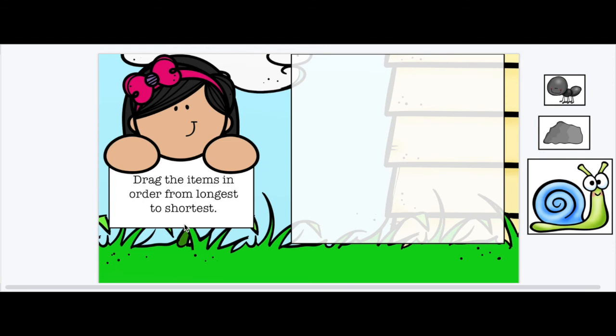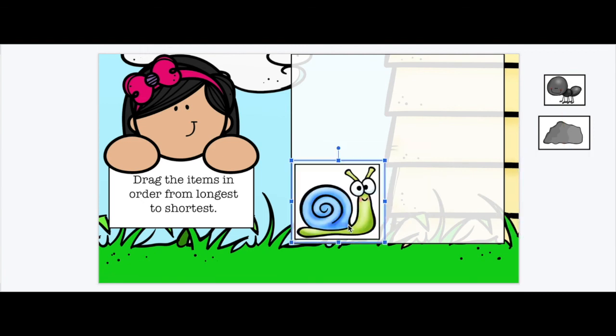Drag the items in order from longest to shortest. So this time I need to start with the longest one. All right. Which of these is the longest from one side to the other? Yeah, the snail. So the snail is the longest one.